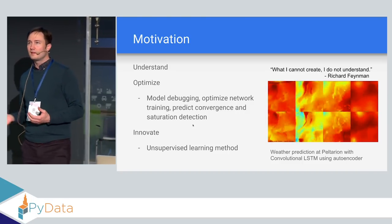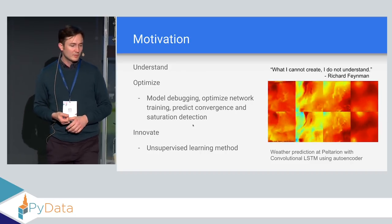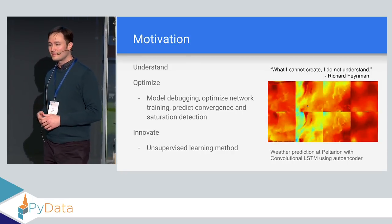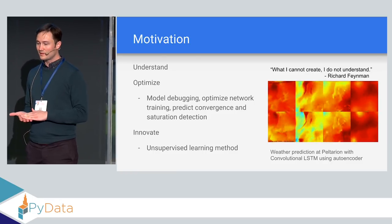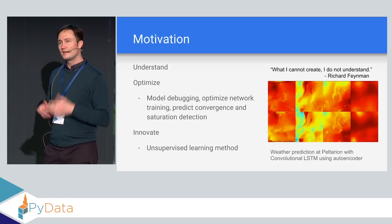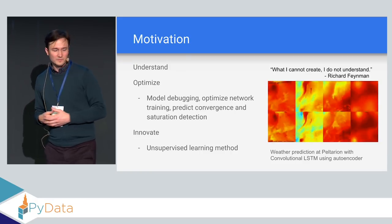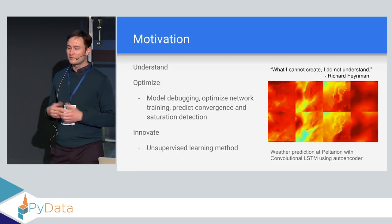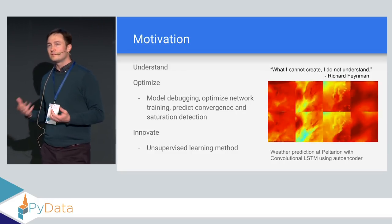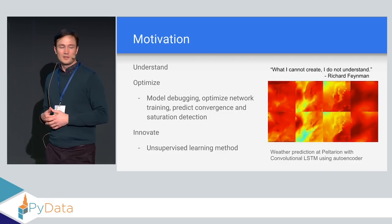Not only do we want to understand this number, but we also want to optimize models not just for test accuracy but also for training time. For example, at Peltarion a model for predicting weather uses a convolutional LSTM with an autoencoder to reduce high-dimensional satellite data into a 2,000-unit bottleneck. Why 2,000 units? Why not 200 or 20,000? Understanding the practical constraints is necessary when optimizing the network, and it's useful to have insight into statistics like what happens when you change a layer and how it affects the next.